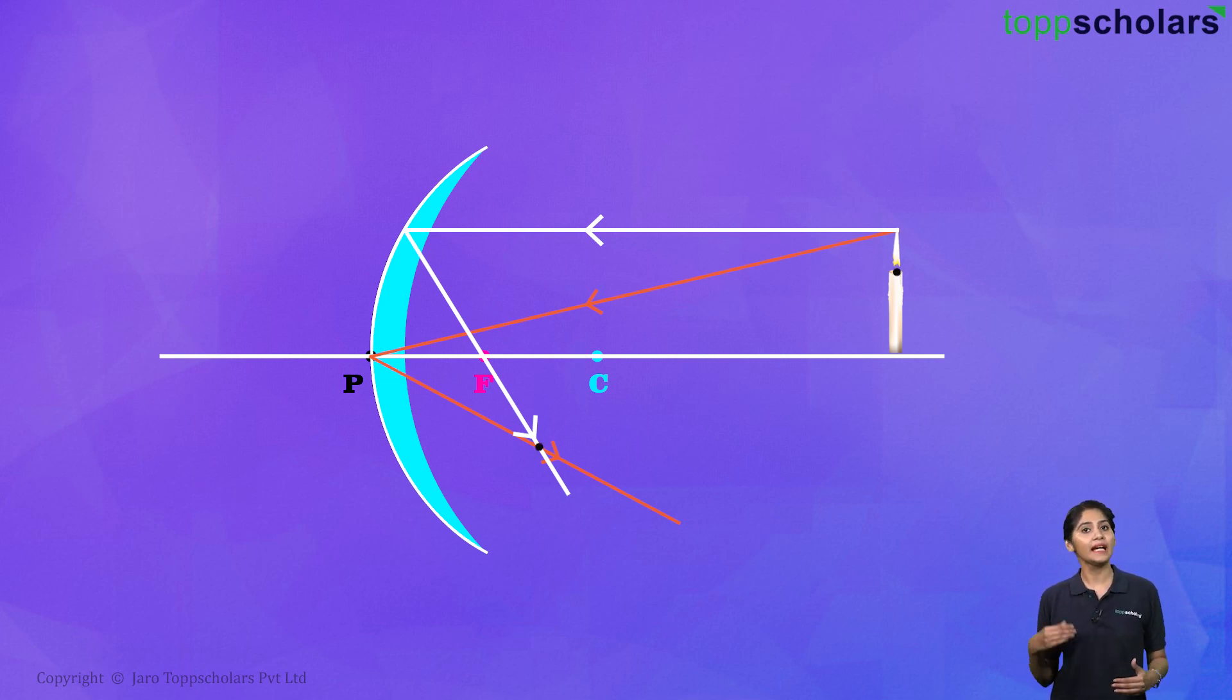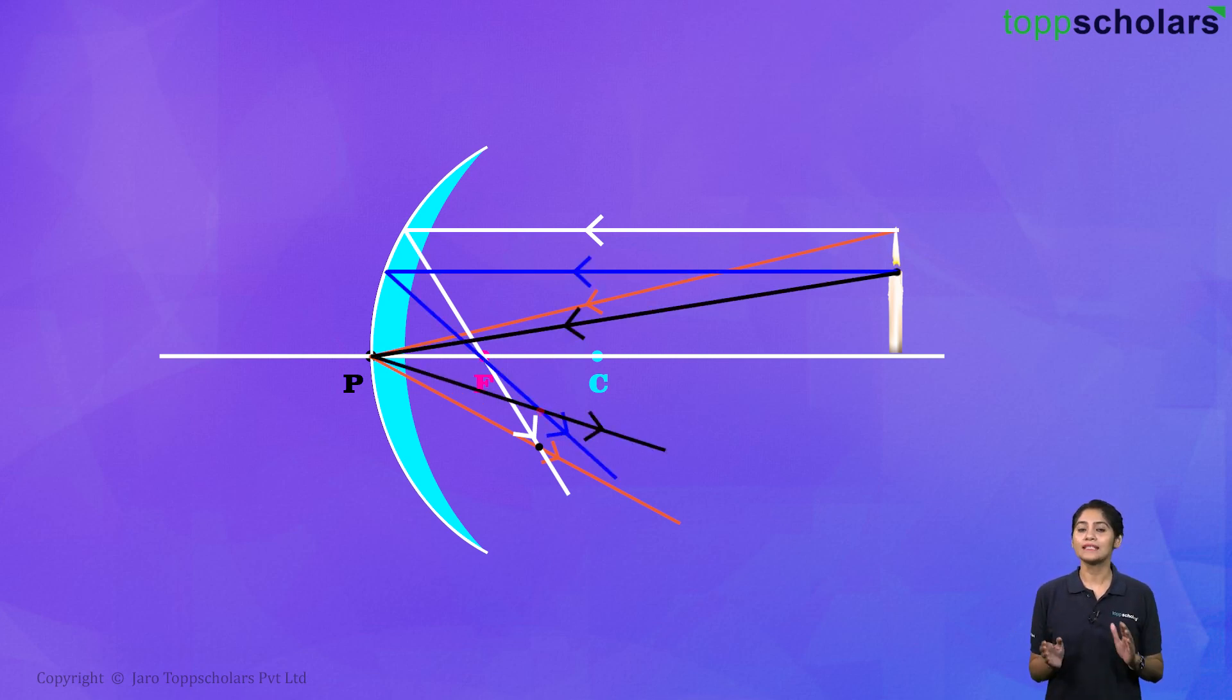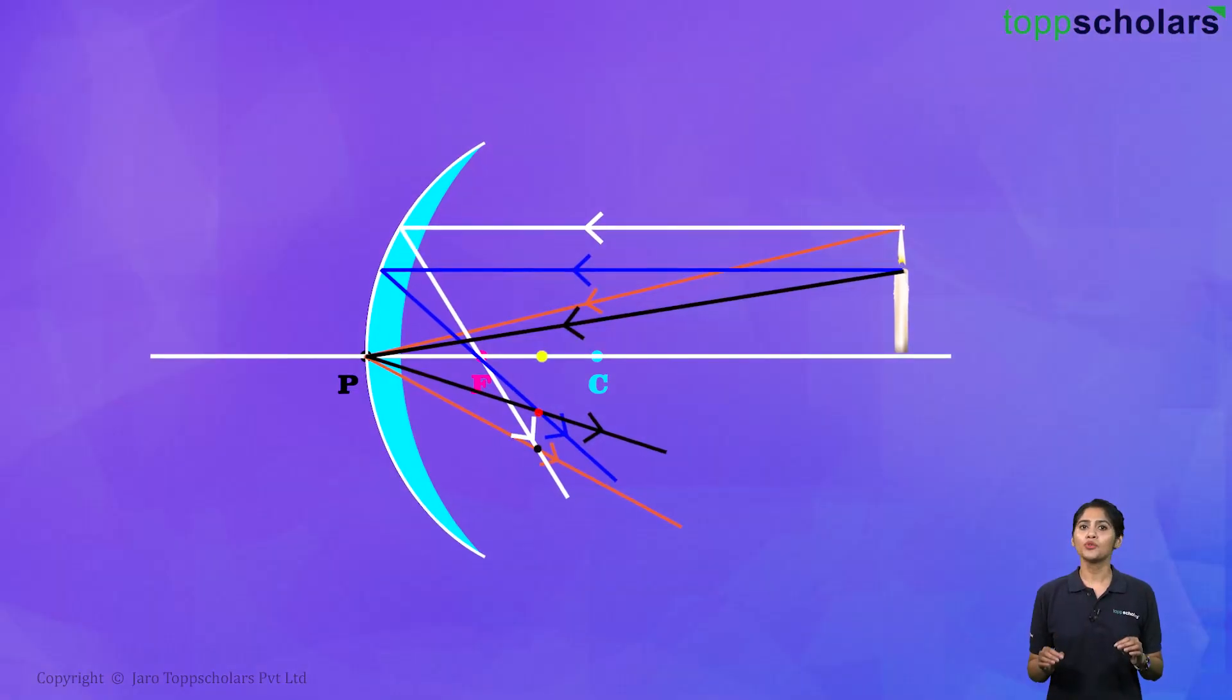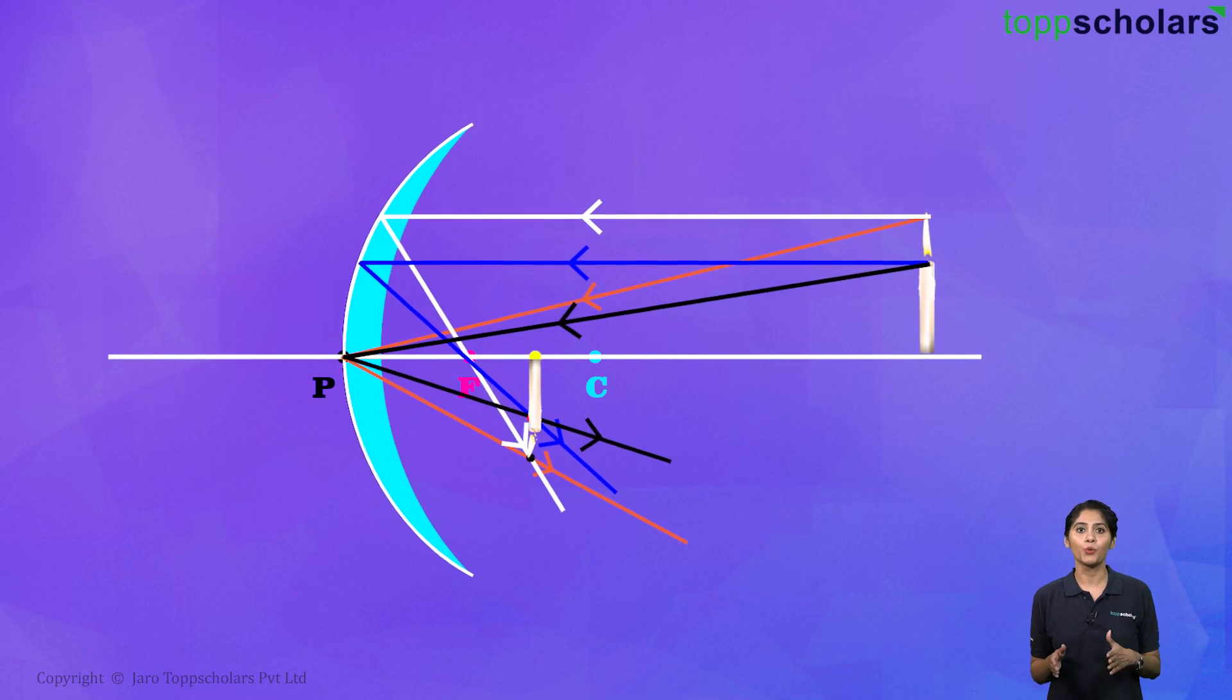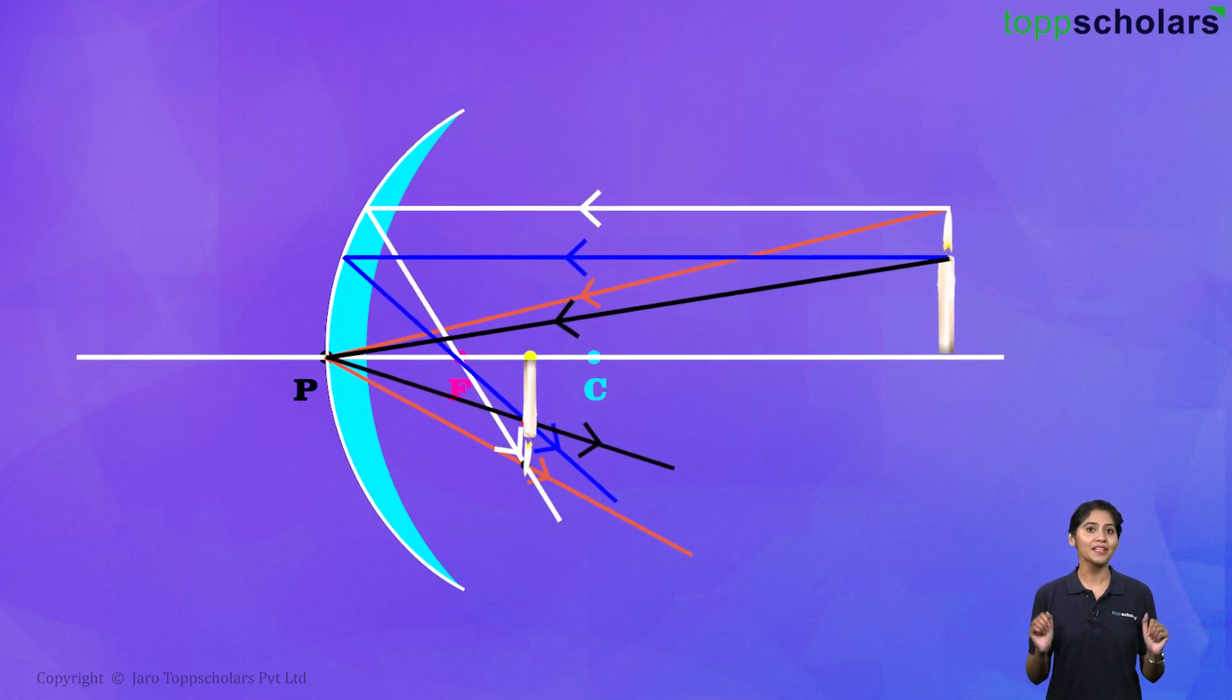And similarly, if you take another point on the object and draw the rays like this, you would see they will get focused somewhere over here. Bottom most point on the principal axis would get focused right at this point over here. And as a result, we get this image.